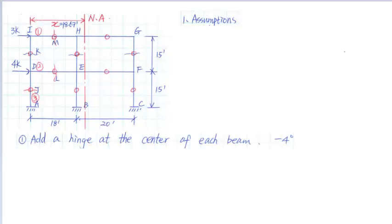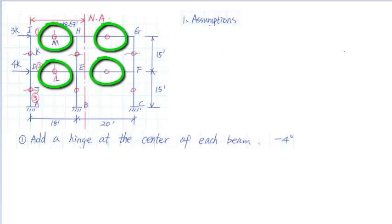First, we will add a hinge at the center of each beam. This will reduce 4 degrees of indeterminacy.